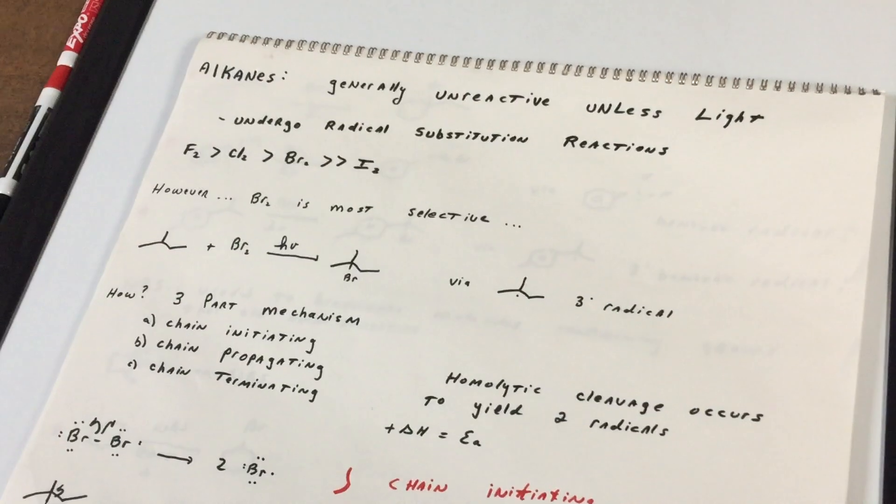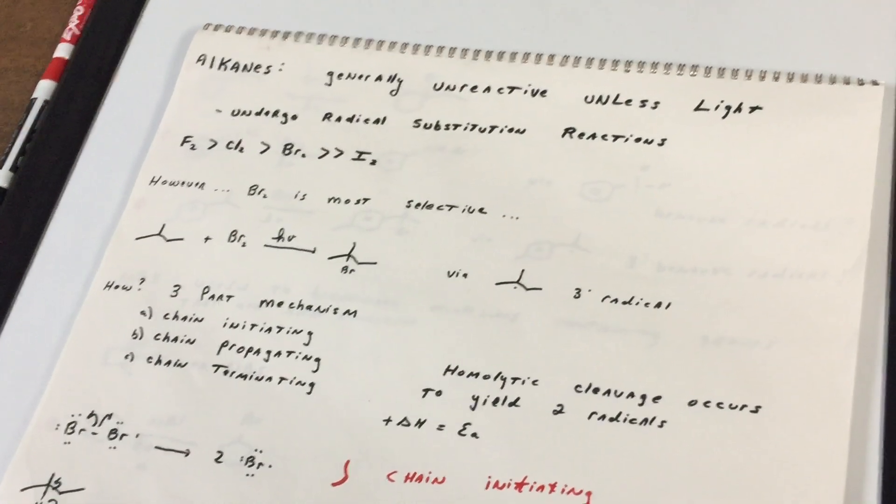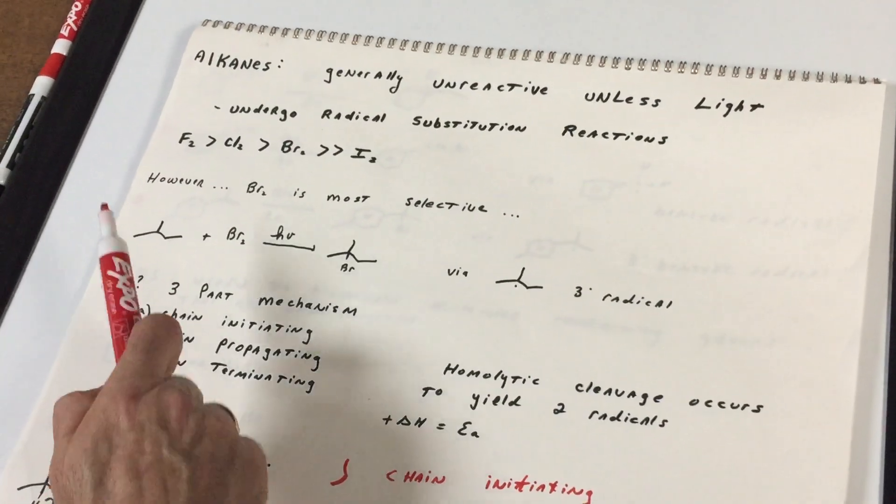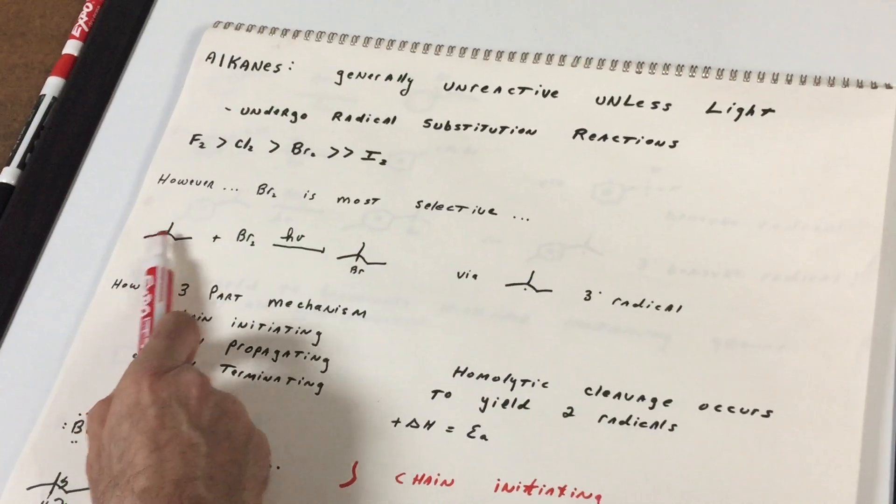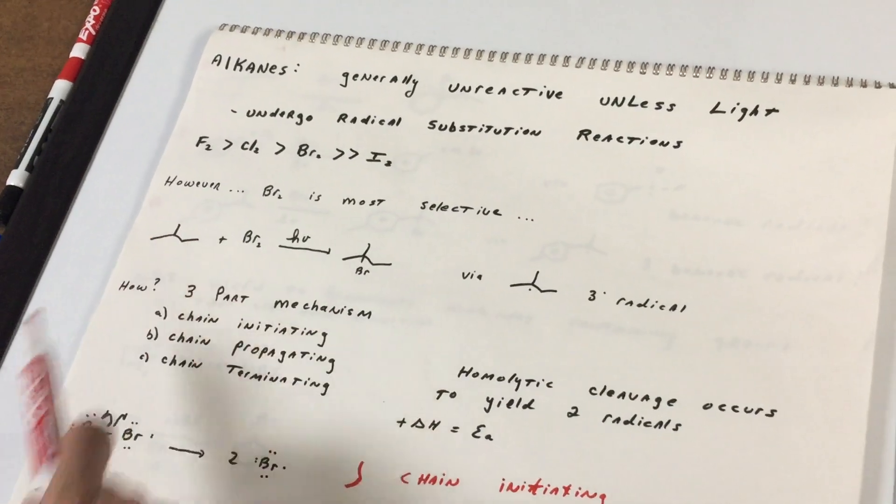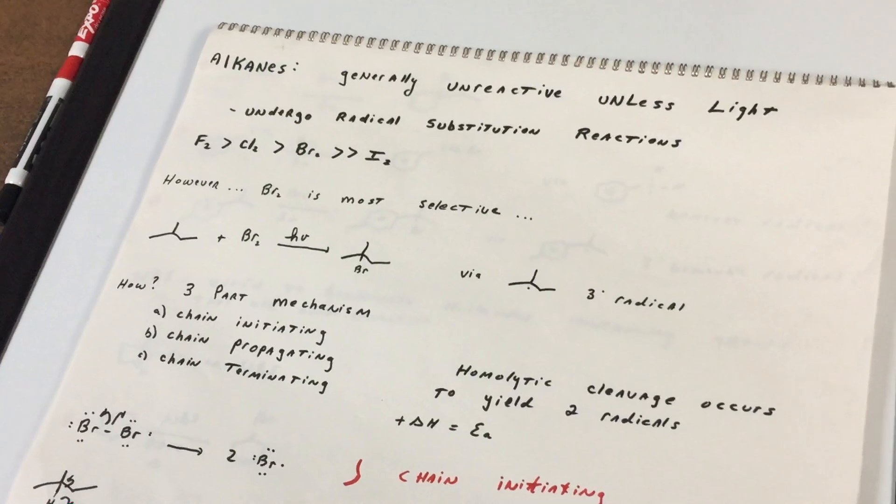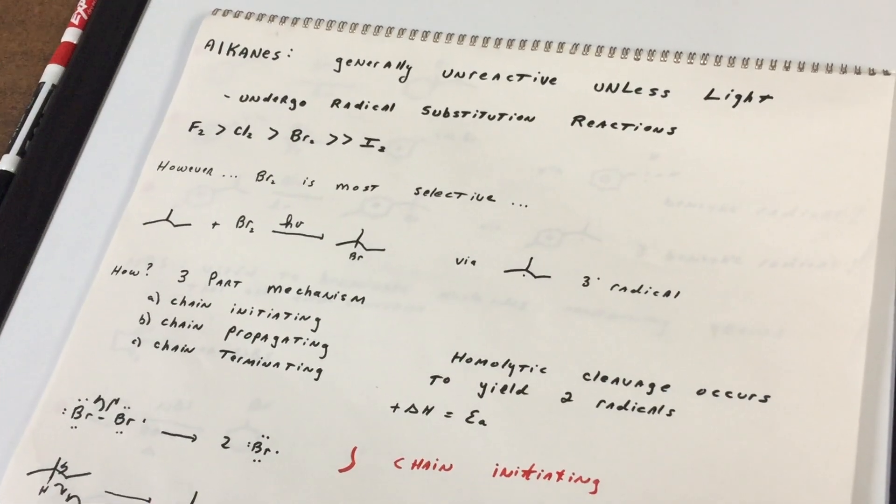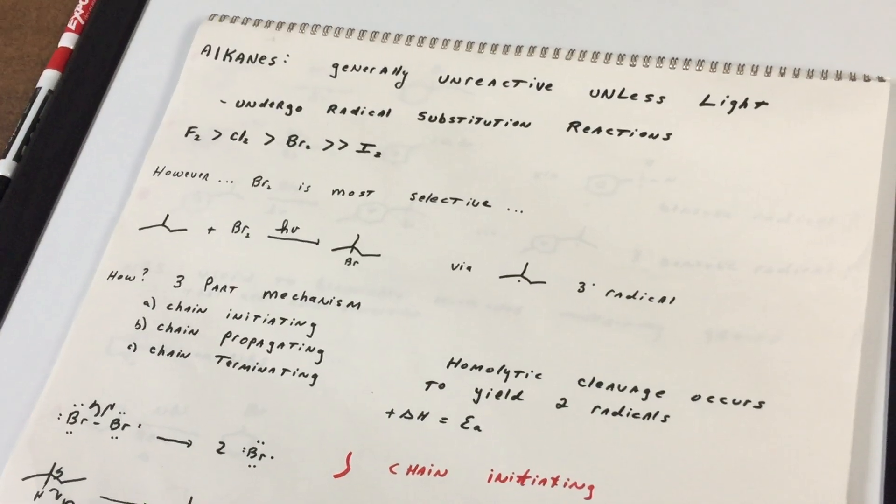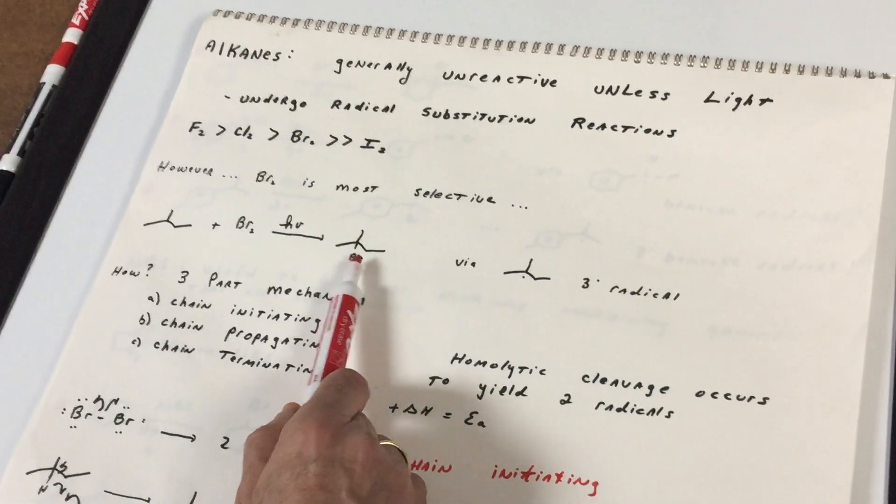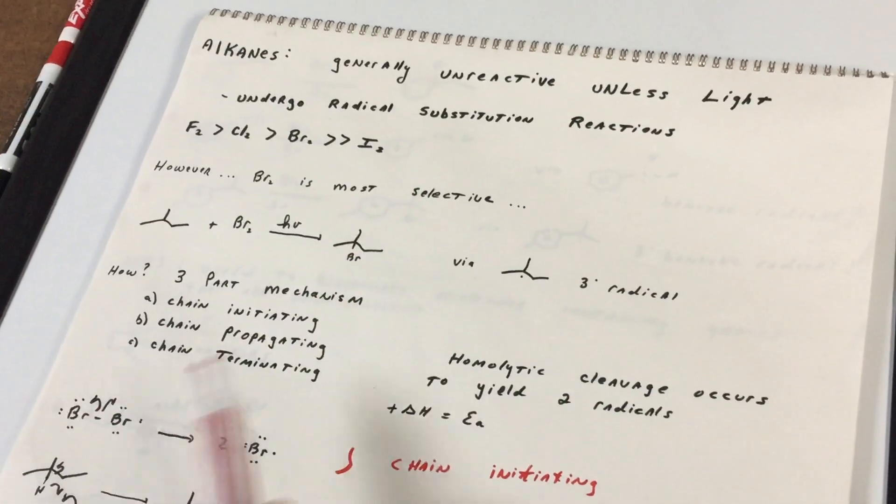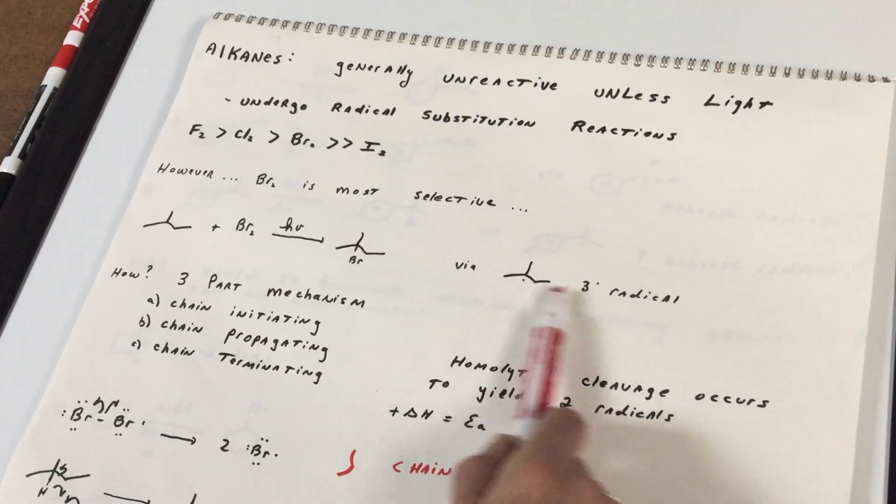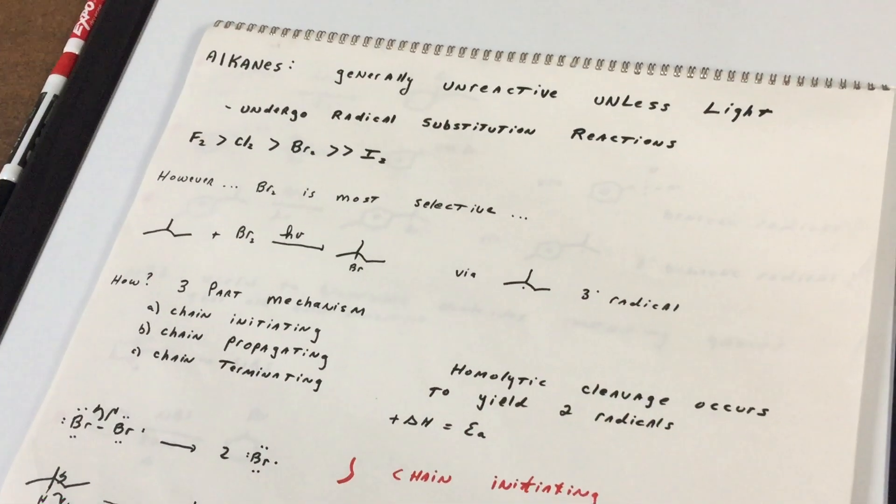Even though bromine is not super reactive, it's the most selective. And as you can see from this example, of all the different H's, it would preferentially remove the tertiary hydrogen. That hydrogen has a smaller bond dissociation energy of any of the other hydrogens, and therefore the bromine will go into that position. And in the mechanism, it will generate a very stable tertiary radical.